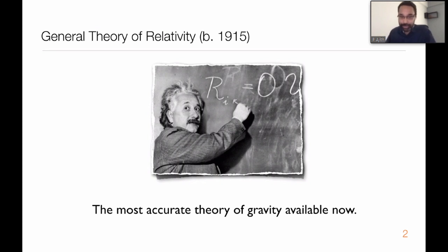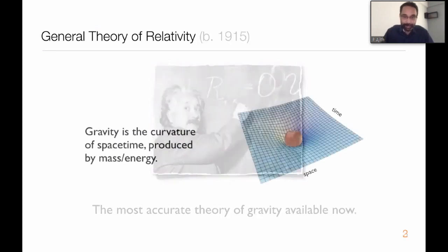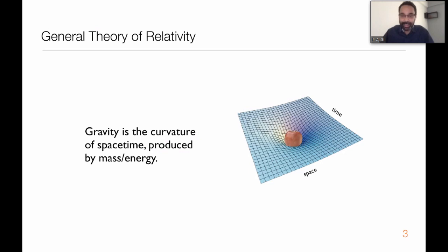Coming back to GR, Einstein's theory is the most accurate theory of gravity available to us now. This is a radical departure from Newton's theory of gravity proposed 300 years ago. According to Einstein's theory, gravity is not a force, but a manifestation of the curvature of space-time, produced by all kinds of mass distributions, as well as energy and momentum content in space-time.